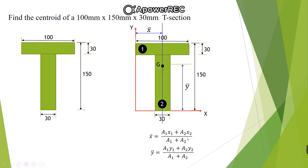To find x-bar and y-bar, we use the formula: x-bar = (a1·x1 + a2·x2) / (a1 + a2) and y-bar = (a1·y1 + a2·y2) / (a1 + a2). Here a1 and a2 are the areas of the first and second rectangular sections, x1 and x2 are the distances of the CG of each rectangle from the Y-axis, and y1 and y2 are the distances of each rectangle's CG from the X-axis.